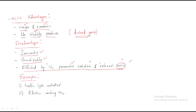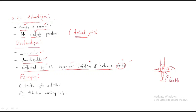Open-loop control system examples: the first is a traffic light controller. In this example, we have traffic lights with four ways. The system does not depend on the number of vehicles — it shows a fixed time, for example 30 seconds, regardless of whether there are more or fewer vehicles on a given path. The timing remains fixed at 30 seconds each cycle.